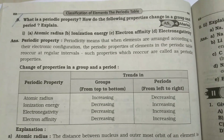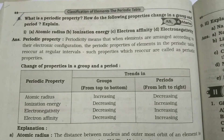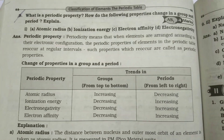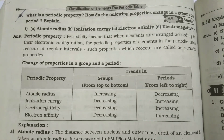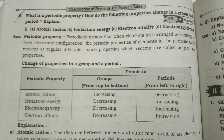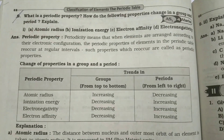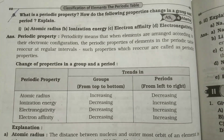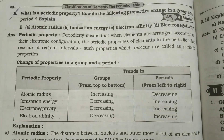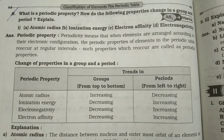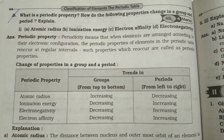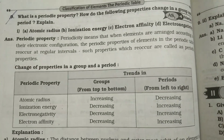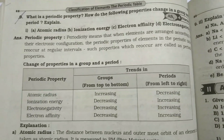One more important question: What is a periodic property? How do properties change in a group and a period? Periodic property means when the elements are arranged according to their electronic configuration, the periodic properties of elements in the periodic table re-occur at regular intervals. Such properties which re-occur are called periodic properties. The properties that change in a group and period are: atomic radius, ionization energy, electron affinity, and electronegativity.